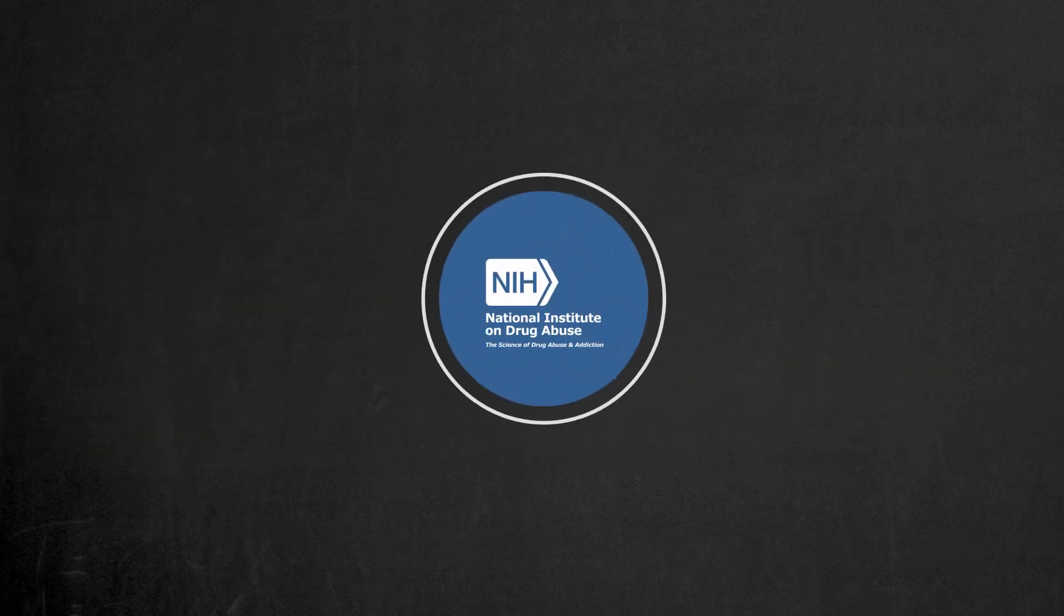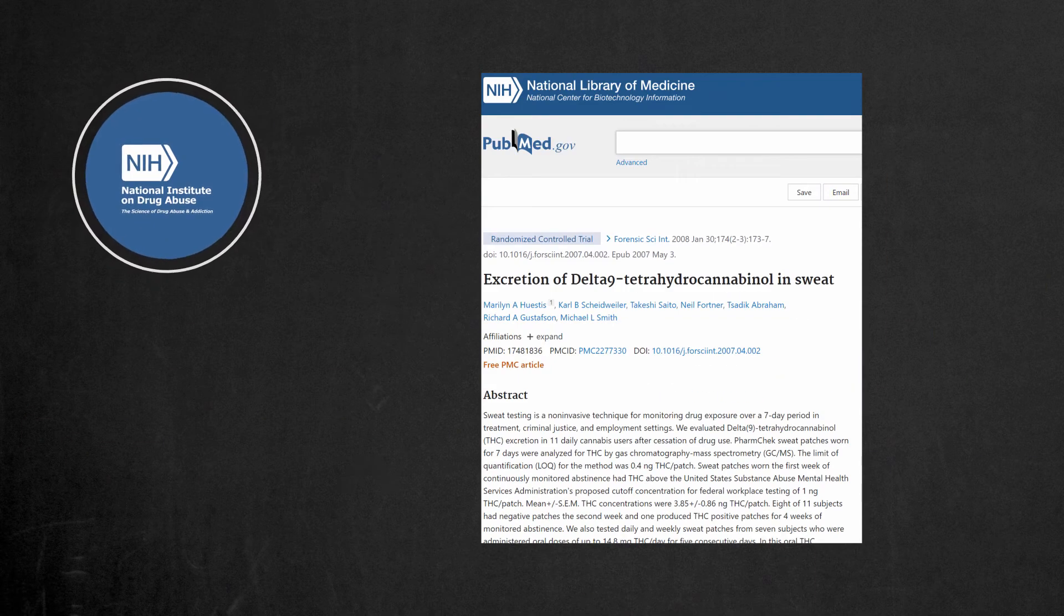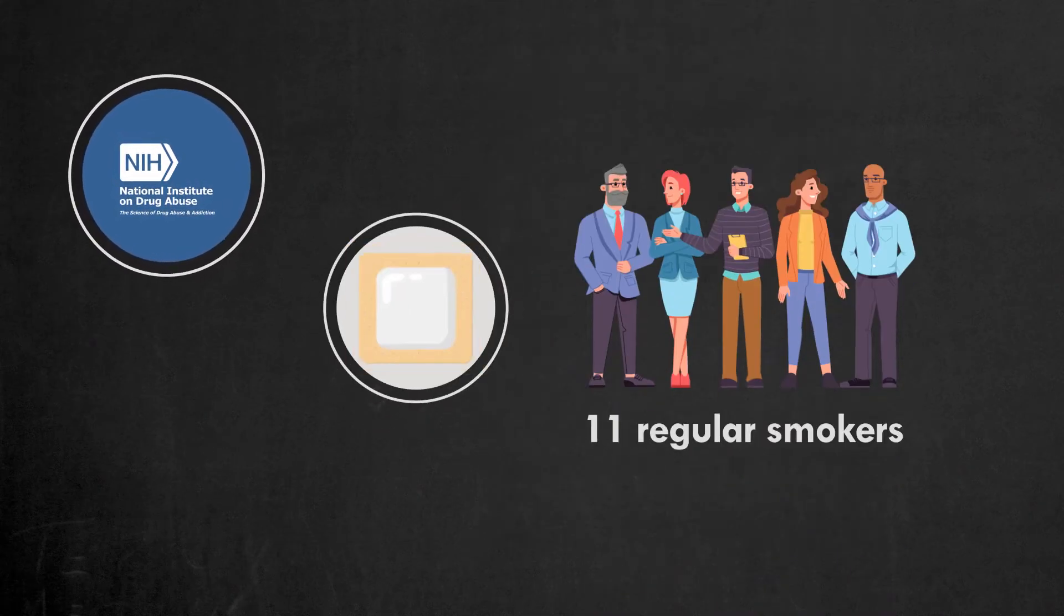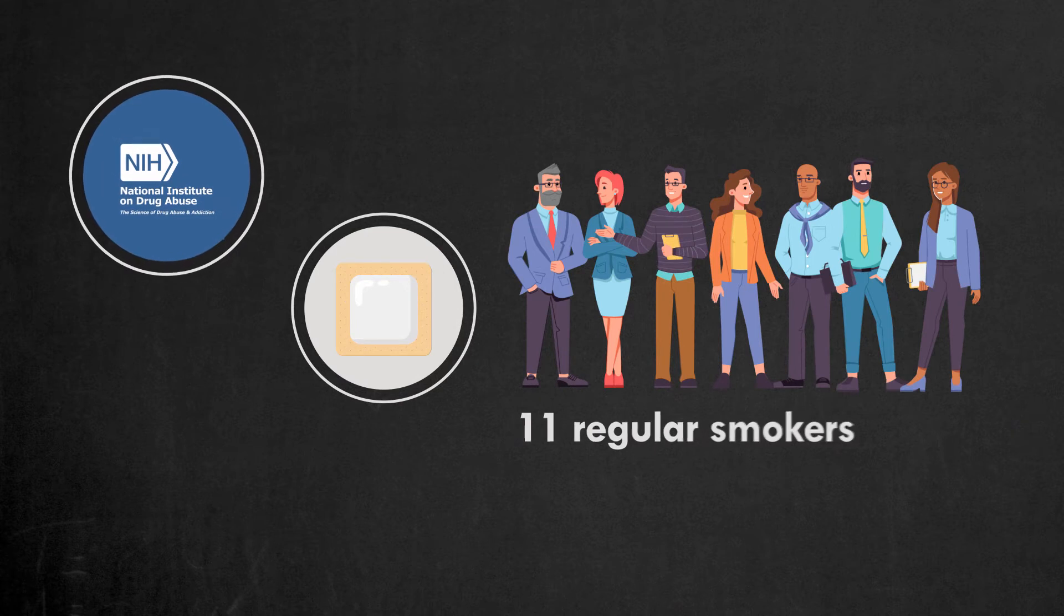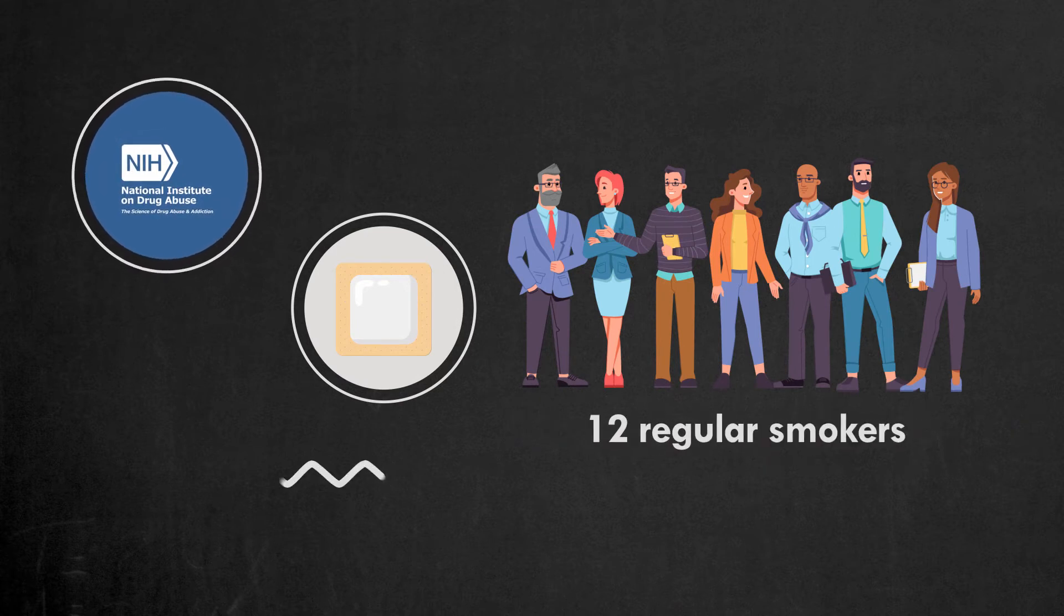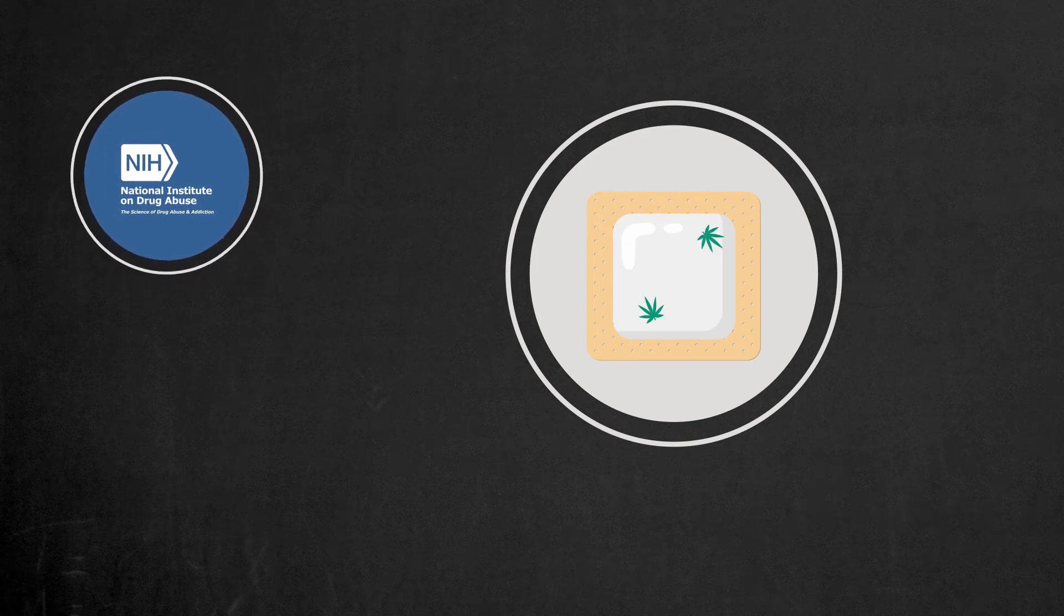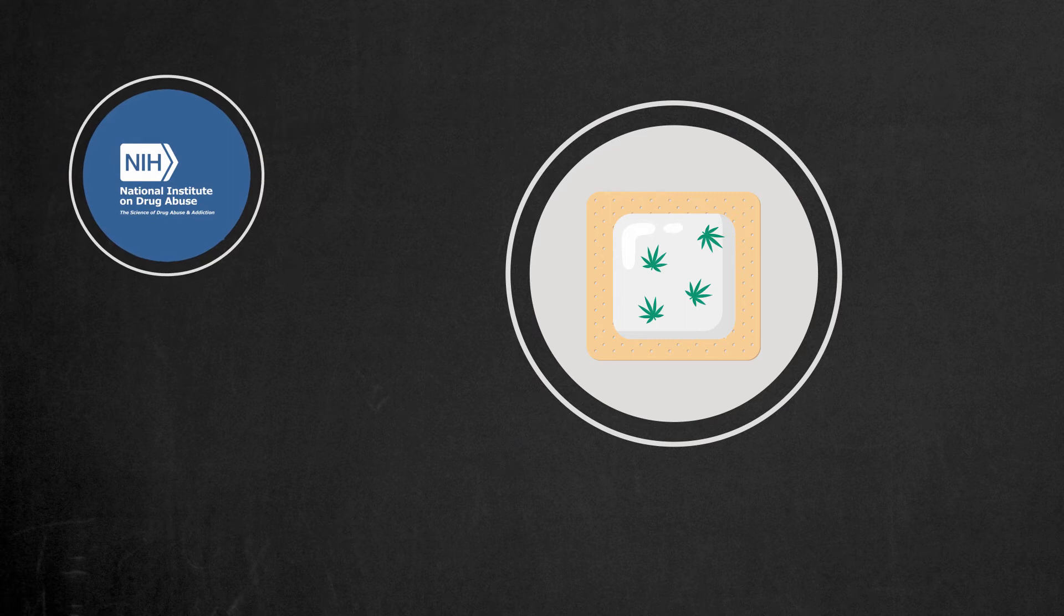The study of National Institute on Drug Abuse analyzed the excretion of THC in sweat in 11 regular smokers. Another study collected sweat patches from 12 regular smokers. Then the THC concentrated in patches was measured. The concentration of THC in both experiments was approximately 4 nanograms of THC per sweat patch in one week.